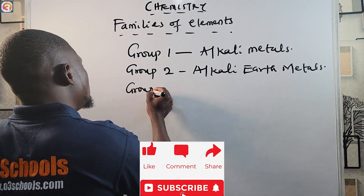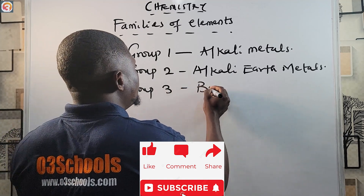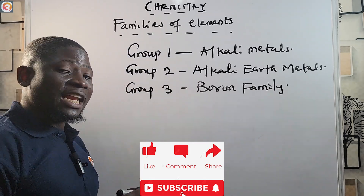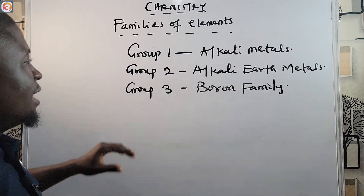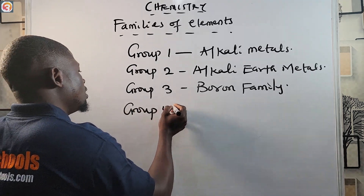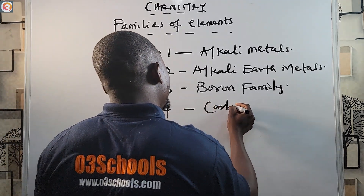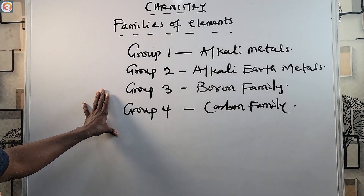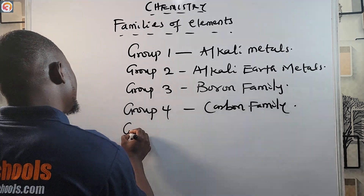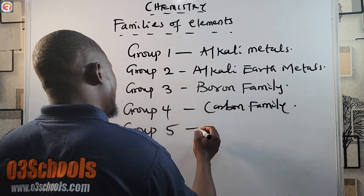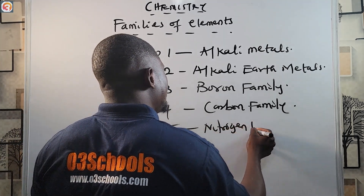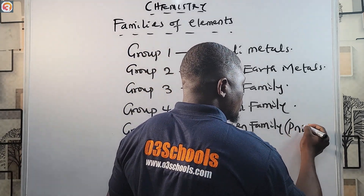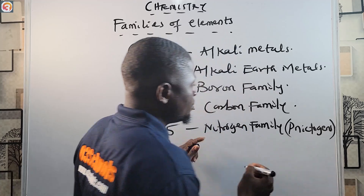Group three elements are called the boron family. Group four elements are called the carbon family. Group five elements are called the nitrogen family, also called the pnictogens.